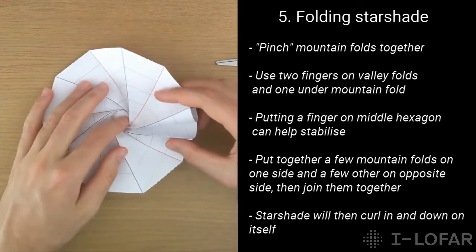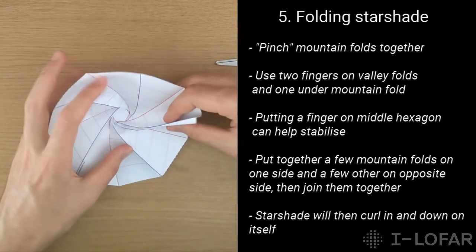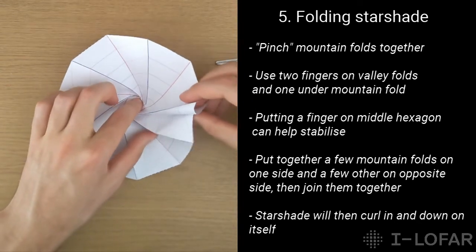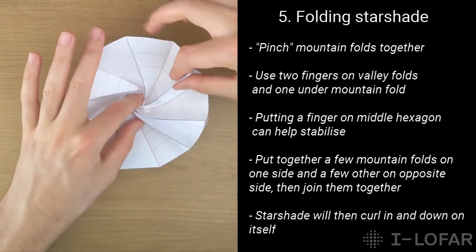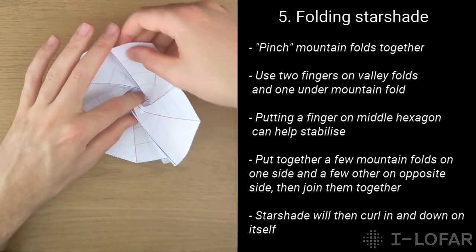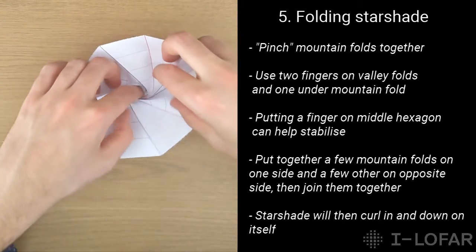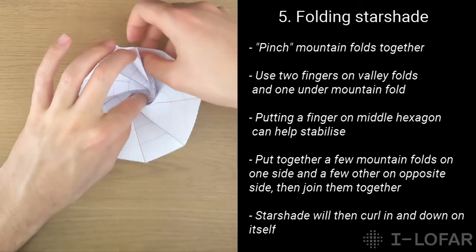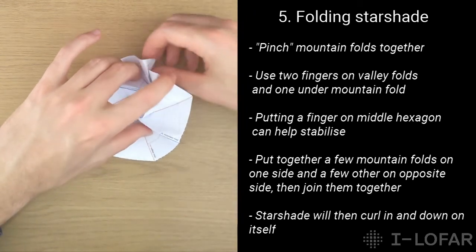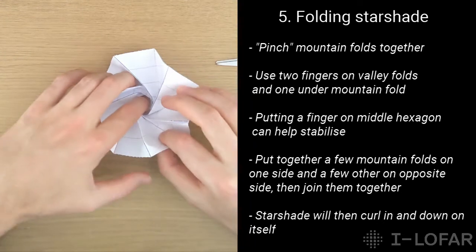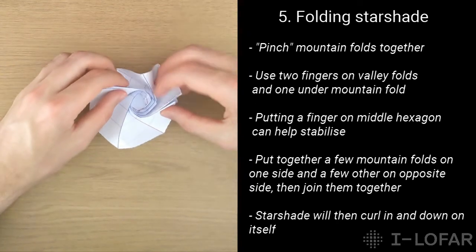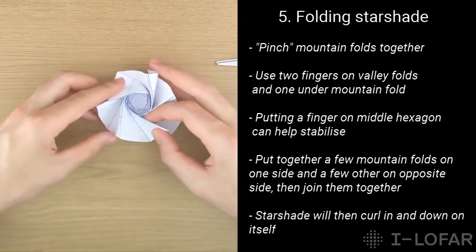That way you can pinch, you can really pinch a mountain fold and two valley folds on the side, and kind of fold them inwards. And you can help yourself by putting a finger in the hexagon in the middle to keep it stable. And you want to go around the shape and try and grab mountain fold after mountain fold, and fold it in and bring it in on itself. Now this part is quite tricky and it takes quite a bit of maneuvering, but eventually after a bit of time, the folds will actually go in. So it can be quite tricky to just fold them all in going on one side. So what can work quite well is bring a few mountain folds together on one side, bring a few mountain folds together on the other side, and then kind of try and bring them all together.